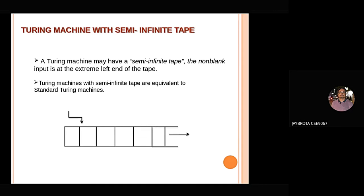Turing Machine with semi-infinite tape has a left but no right tape. It is a two-track tape. Upper track represents the cells to the right at initial head position and the lower track represents the cells to the left of the initial head position in the reverse order. Turing Machine with semi-infinite tape are equivalent to standard Turing machines.